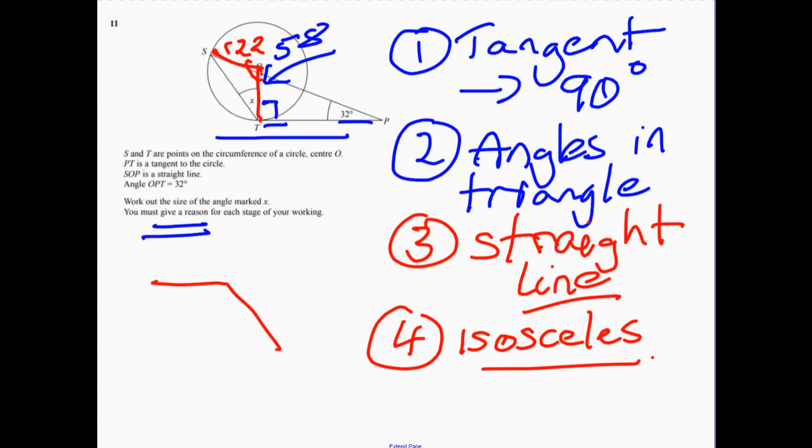So what have we got? We know that this one's 122. And then we need to work out these two angles here. Well, all together it's 180. So 180 take away 122, and then divide that by 2 to split it equally between those. So x equals 29 degrees.